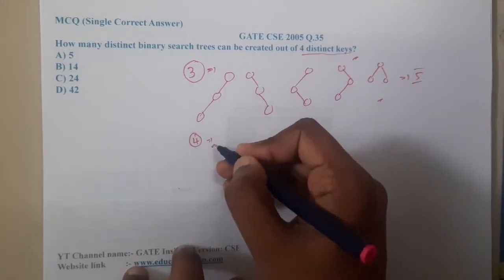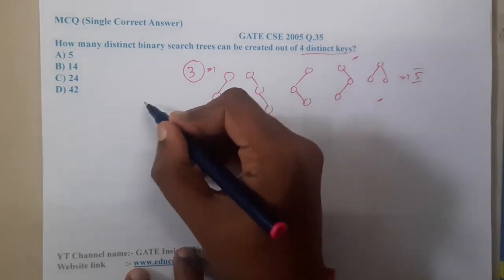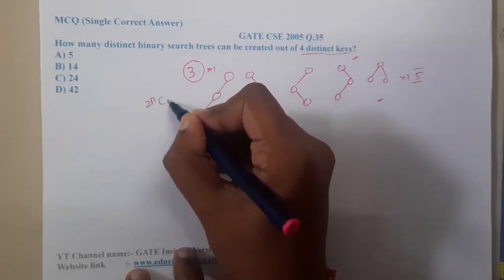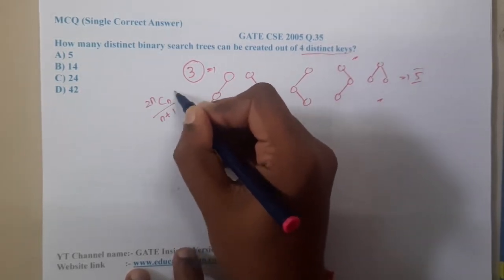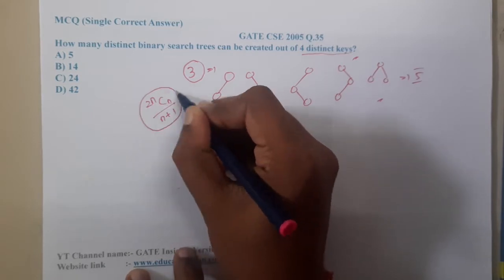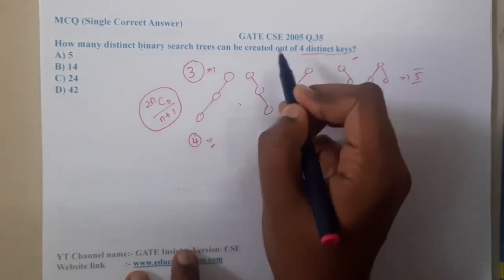So instead of wasting time in that, at that time I told you a formula if you recall: 2nCn by n plus 1. So this is the formula to find the binary search trees for n number of nodes.